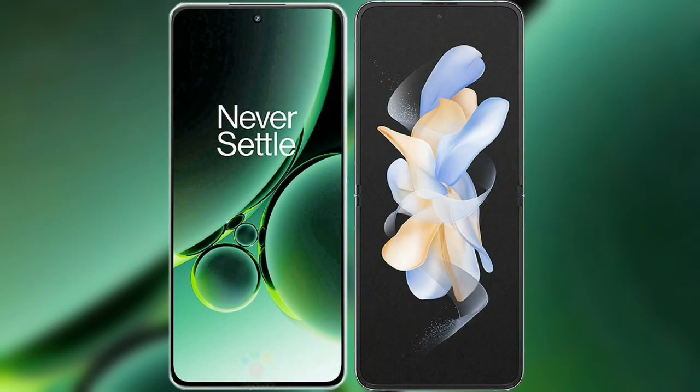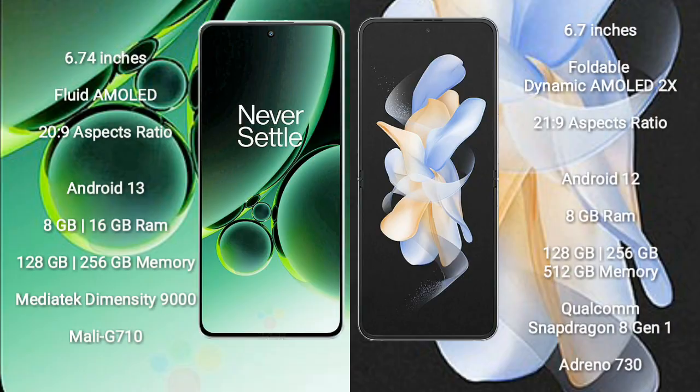Comparing the OnePlus Nord 3 with the Samsung Galaxy Z Flip 4. The OnePlus Nord 3 comes with a 6.74-inch flat AMOLED display and 20:9 aspect ratio. The Samsung Galaxy Z Flip 4 comes with a 6.7-inch foldable dynamic AMOLED display and 21:9 aspect ratio. The OnePlus Nord 3 runs on Android 13, while the Samsung Galaxy Z Flip 4 runs on Android 12.